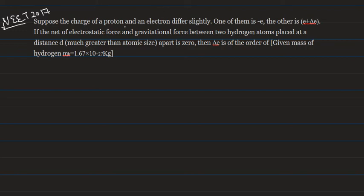Suppose the charge of a proton and electron differ slightly. One of them is -E and the other is E+ΔE. So if net electrostatic force and gravitational force between two hydrogen atoms placed at a distance d apart is zero, then order of ΔE we will find out.